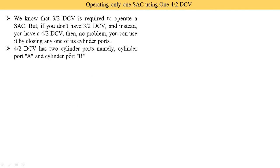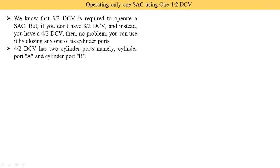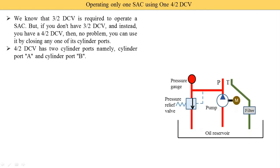A 4/2 DCV has 2 cylinder ports: cylinder port A and cylinder port B. Here you can see the general hydraulic system diagram — that is the oil reservoir, suction pipe, pump, which is run by using the motor. This is the outlet of the pump, which is the pressure port. This is the return line; in the return line you see the filter. This is the pressure relief valve and the pressure gauge.